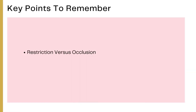Key points to remember: if the objective of an embolization procedure is to completely close a blood vessel, the root operation is Occlusion. If the objective is to narrow the lumen but not completely close it, the root operation is Restriction. Carefully compare Restriction and Occlusion when coding similar procedures — complete closure is Occlusion, partial closure is Restriction.